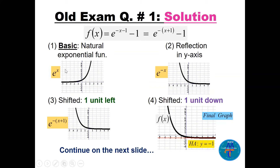Start with the natural exponential function e^x — the graph passes through (0, 1). Then e^(−x) is a reflection in the Y-axis. Step two: shift one unit to the left, since we have (x + 1) in the exponent after factoring. Then shift down because of the minus one outside — the horizontal asymptote becomes y = −1.